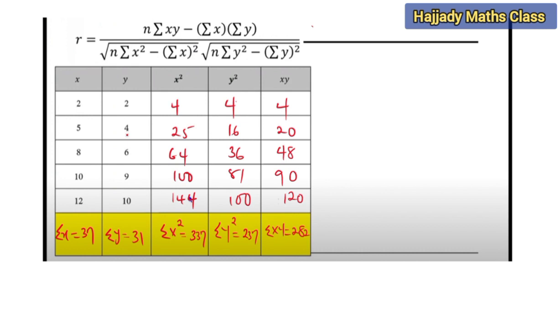Now using this formula, N is the number of observations. We have our N to be 5. Summation xy is 282 minus summation x, which is 37, times summation y, which is 31, over square root of N which is 5 times summation x squared which is 337 minus summation x which is 37 squared, times square root N which is 5 times summation y squared which is 237 minus summation y which is 31 squared.